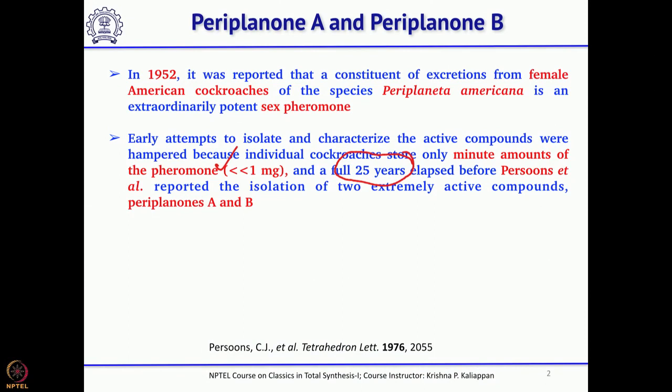Today we talk about Total Synthesis of a Natural Product called Periplanone B. This is a very interesting natural product; it was isolated from American cockroaches. It is a sex pheromone, and what made this compound important is that very minute quantities — less than a milligram — were obtained from these cockroaches, and it took about 25 years to report the isolation of the two pheromones, Periplanone A and Periplanone B.